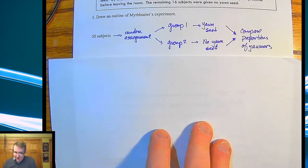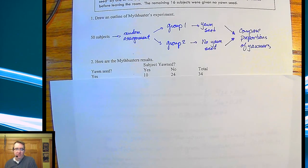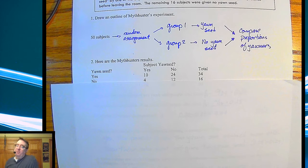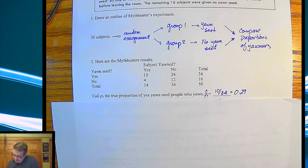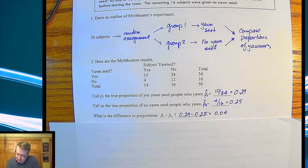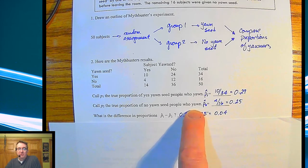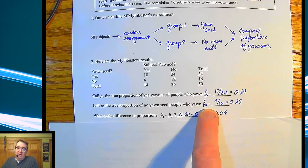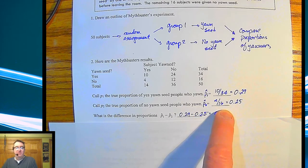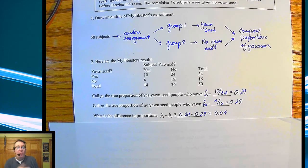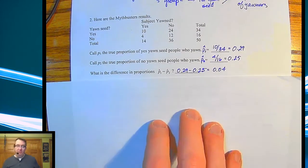Now, here is what the Mythbusters got. So out of their 34 people who had a yawn seed, 10 of them yawned, 24 did not. Out of the 16 who did not get a yawn seed, four of them yawned in the time that they were being observed. And so that gave a total of 14 out of 50. And the proportion of people who yawned, the yawn seed who did get people who yawned, that was 10 out of 34, that's 29%. And the true proportion of no yawn seed people who yawned was p hat of 2, and that's 4 out of the 16, that was 25%. So then the question is, what's the difference of those proportions? 29 minus 25% gives us a 4% difference.